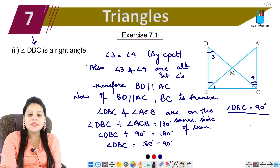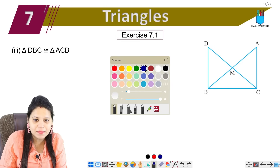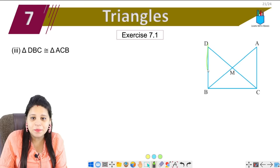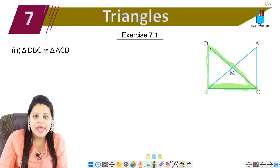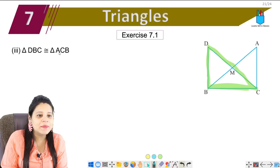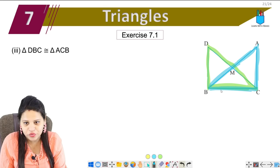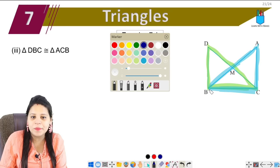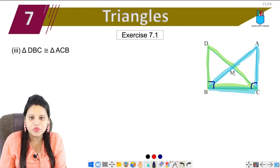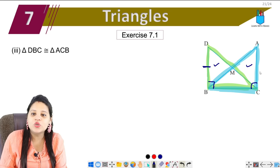Now let's go to the third part. We need to prove triangle DBC congruent to triangle ACB. Let's identify these two triangles: triangle DBC and triangle ACB. We have already proved concurrent results for DB and ACB.